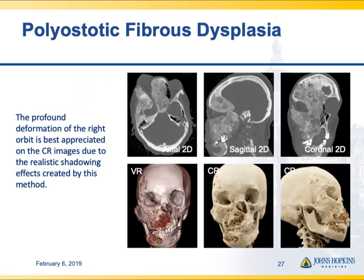This is a sad case of polyostotic fibrous dysplasia — a very deforming process — where the patient was losing vision in her right eye. The cinematic renders really show how profound the deformity of the right orbit is, and with realistic shadowing effects you can really see how shadowed out the deep part of the orbit is, helping you understand the effects on the optic nerve causing vision loss.